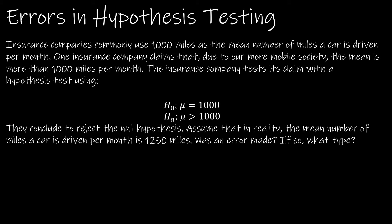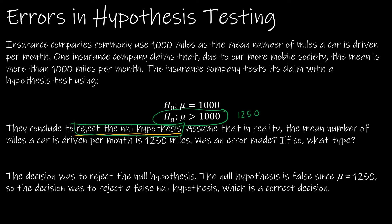Let's look at another example. Insurance companies commonly use 1000 miles as the mean number of miles a car is driven per month. One insurance company claims that due to our more mobile society, the mean is more than 1000. The hypothesis test has null: exactly 1000 miles, and alternative: greater than 1000 miles. They conclude to reject the null hypothesis. Assume that in reality the mean is 1250 miles — 1250 does in fact support the alternative hypothesis, so they should be rejecting the null. They concluded to reject the null, and that's what they should have done. So in this case, there was no error made.